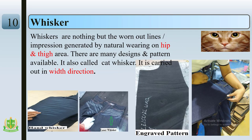Whisker is nothing but the outlines impression generated by natural wearing on the hip and thigh area. There are many designs and patterns available, also called whisker. It is carried out in the width direction. To create whisker effect on garments, we spray the garments on an engraved pattern and use sandpaper to create the whisker effect by hand sanding.